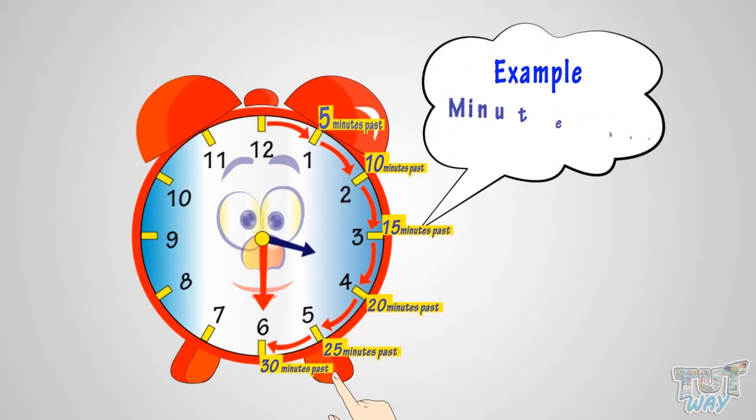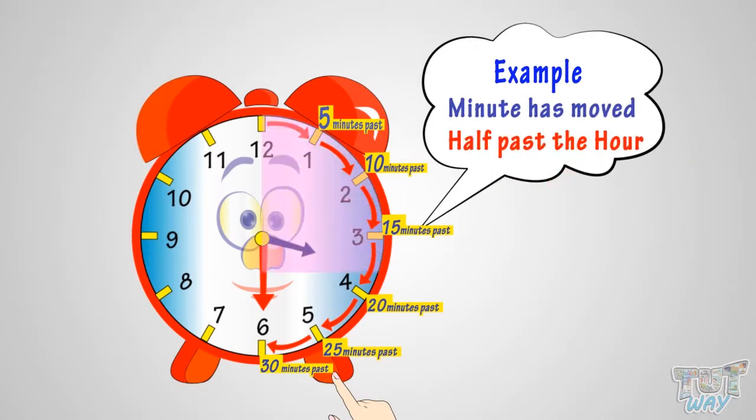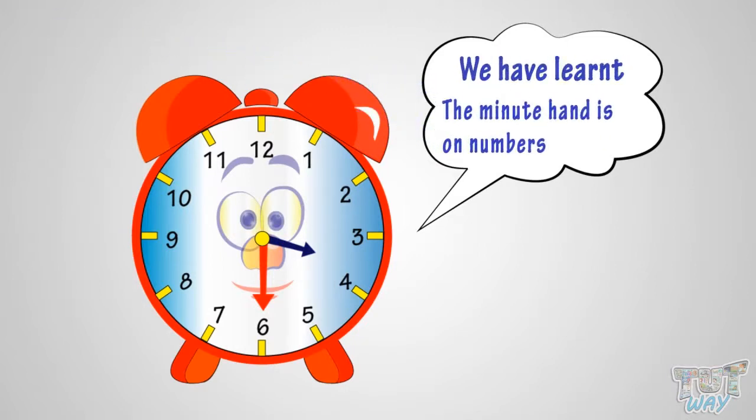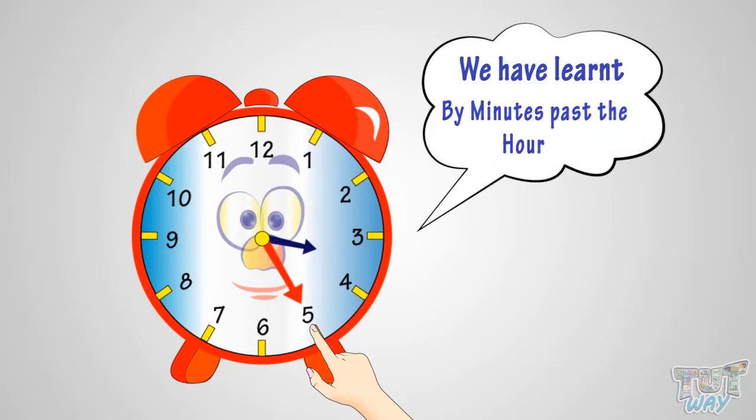The reason is the minute hand has moved half past the hour. Good! So what have we learned? We have learned when the minute hand is on numbers 1, 2, 4, or 5, we tell time by minutes past the hour.